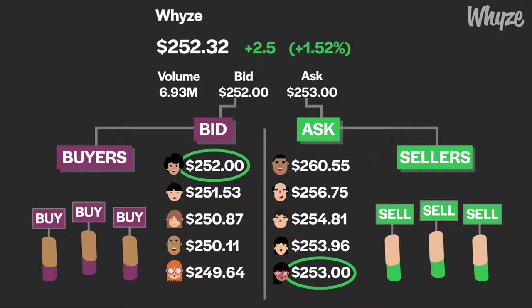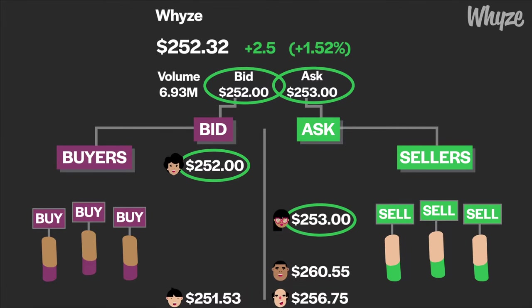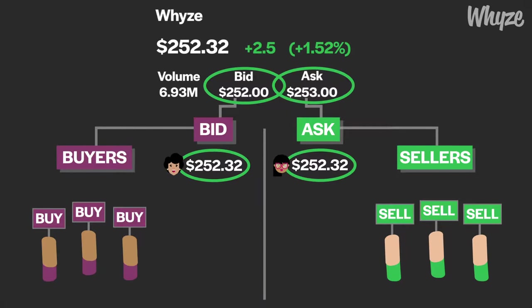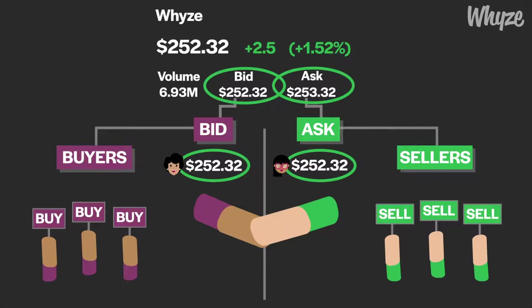When someone wants to buy a stock, they will receive the stock at the ask price, since this is the lowest price sellers are willing to give it up for. When someone wants to sell a stock, they will receive the bid price, since this is the highest price buyers are willing to pay for a stock. In other words, a trade between two investors is only made when a seller's ask price meets a buyer's bid price and vice versa.